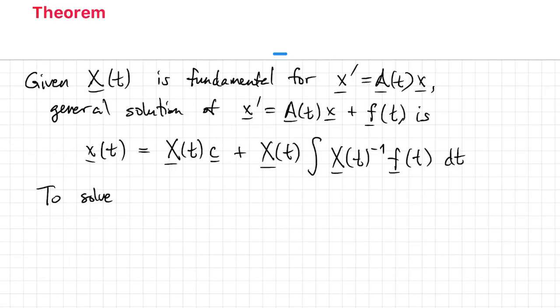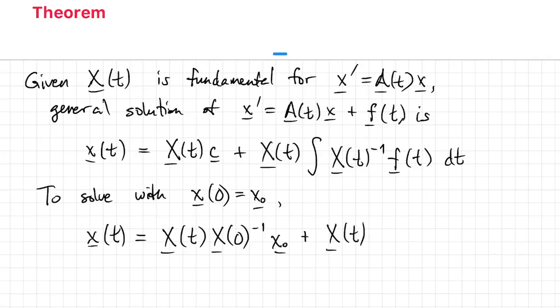For an initial value problem, there is no arbitrary constant anymore. So we can substitute for that using the initial condition. What we get is capital X of T times capital X at 0 inverse times the initial value. And then it's easiest to replace the integral with a definite integral.